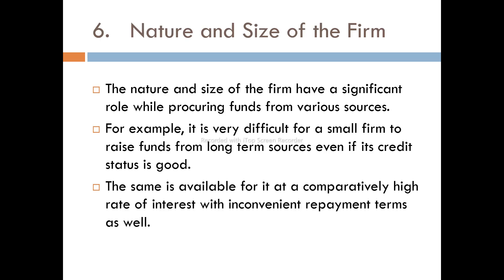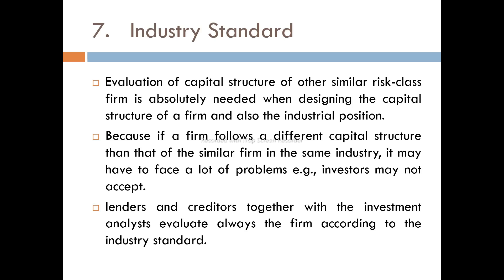Industry standard is another factor — the capital structure is affected by the industry norms. Companies tend to align their capital structure with the standards prevalent in their industry. These are the seven factors that influence the capital structure decision of a firm.